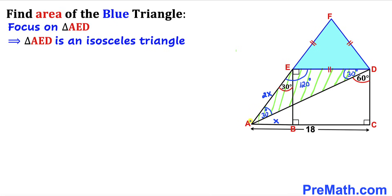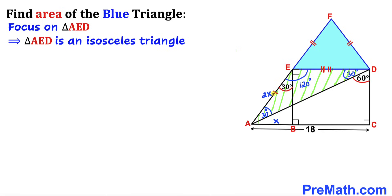Therefore we conclude that triangle AED is an isosceles triangle, which means side length AE equals side length ED. We know that AE is 2X, so therefore ED has got to be 2X as well. So our side length ED turns out to be 2X.